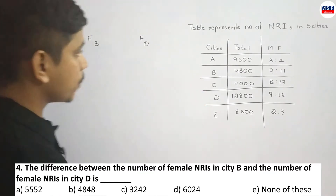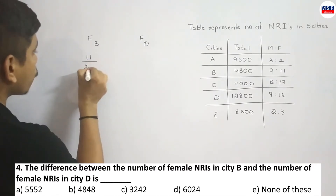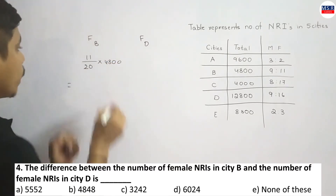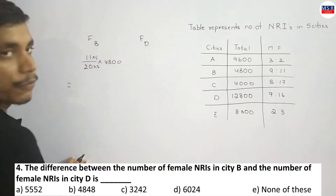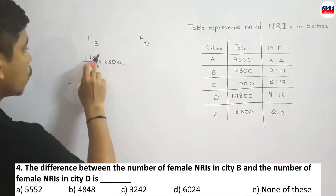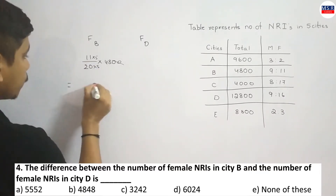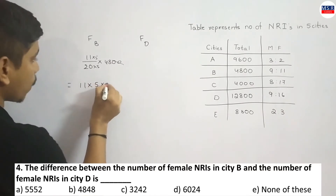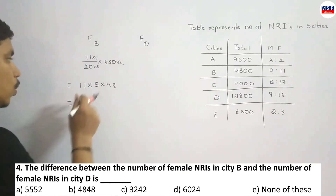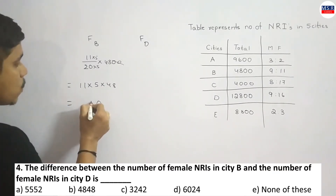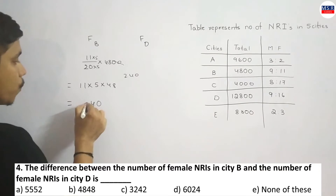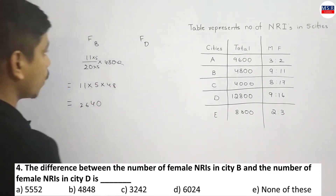Female NRIs from city B: 11 out of 20 parts multiplied by 4800. Multiply by 5, double zeros cancel out, giving 48 into 5. So 480 divided by 2 = 240, and 240 multiplied by 11: working out to 2640. That is the female NRIs from city B.